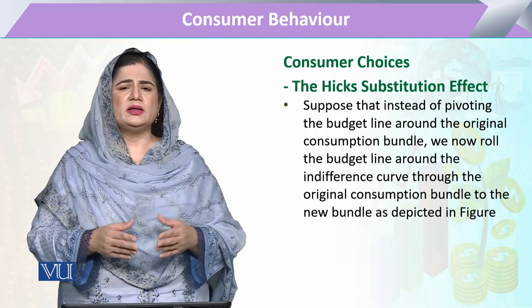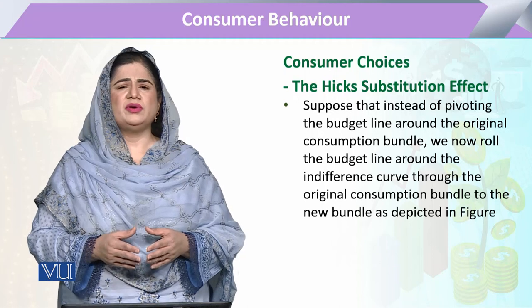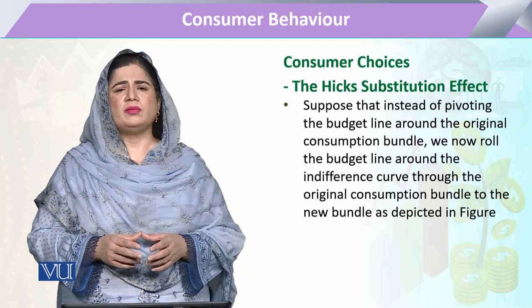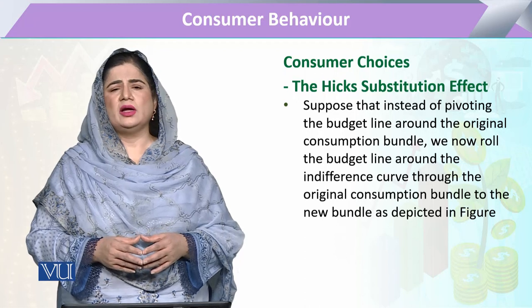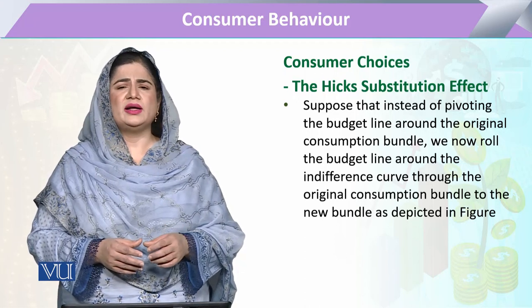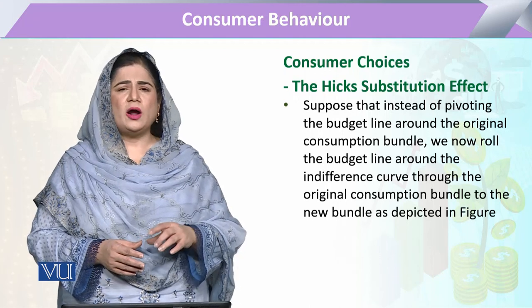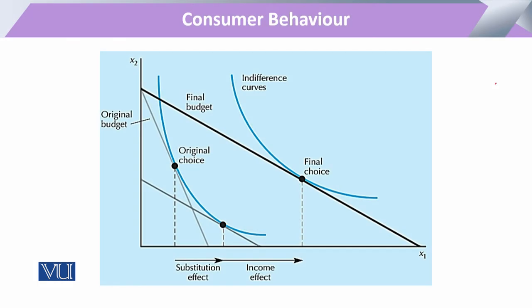If price increases, the original budget line pivots inward. In the assessment of the Hicks substitution effect, we do not check movement along the original bundle; rather, we pivot this budget line around the original indifference curve. Looking at the diagram, the consumer has one budget line and one indifference curve, and on this indifference curve the consumer has bundle A — that is the original optimal choice bundle.